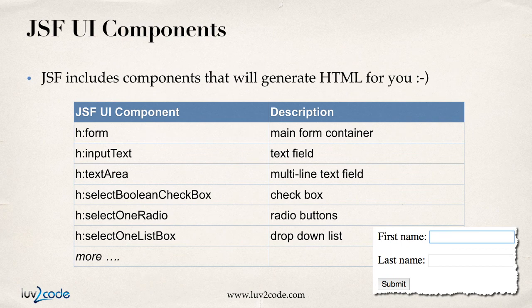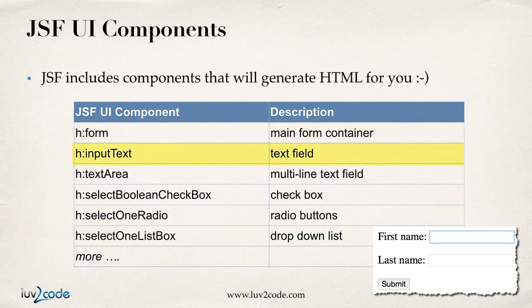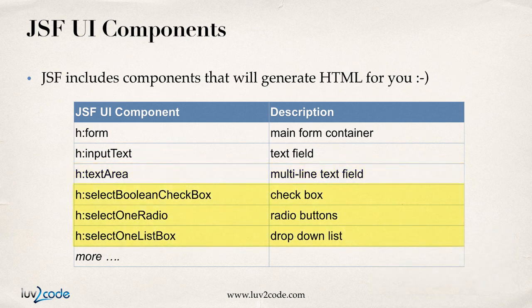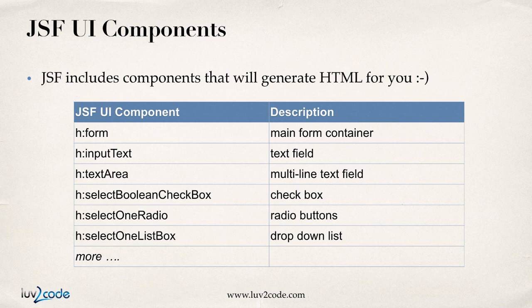JSF has components that will generate the HTML for you. If you're building an HTML form, you can make use of some of the JSF UI components. If I'm building a form, I'll use h:form — that's the main form container. Once you have a form container set up, you can add multiple entries: maybe an input text, which is a normal text field, or a text area, which is a multi-line text field. You can also make use of checkboxes, radio buttons, and drop-down lists. I'll cover each one of these UI components in the following videos with a deep dive on each one, but at least here I wanted to give you an overview of some of the available components.